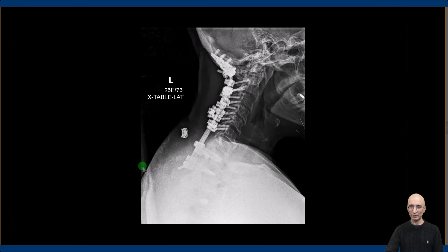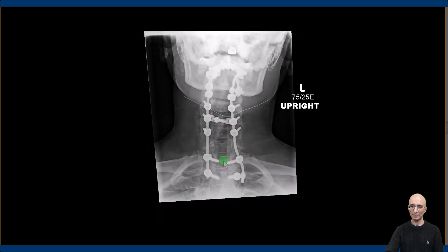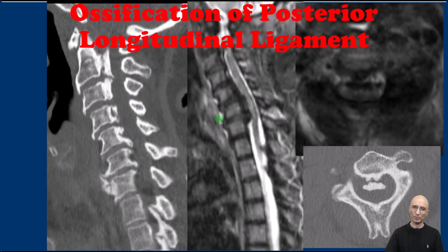Our patient underwent emergency posterior spinal decompression and fusion extending from the suboccipital region to the upper thoracic spine, and we can see the fusion hardware. Our patient had ossification of the posterior longitudinal ligament, and I think minor trauma led to spinal cord contusion in the setting of ossified posterior longitudinal ligament causing severe spinal canal stenosis.